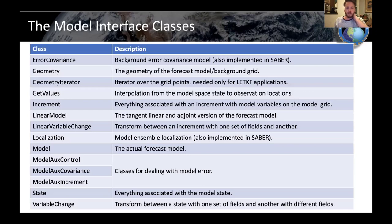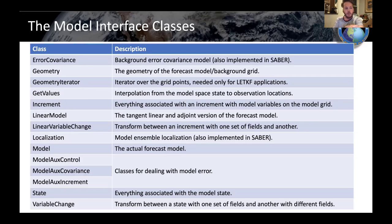Here's a list of the classes actually included in this model space: error covariance for background error; geometry, which is the grid of the model; the geometry iterator, needed for ensemble applications like LETKF; and get values, which we'll talk about in some detail — essentially it means interpolation from model space to observation space, as well as variable transforms potentially. Then there's the increment, the linear model, linear variable changes, localization (handled by SABER), and the model, which actually means the forecast model.